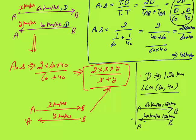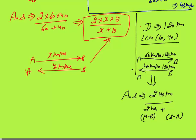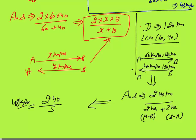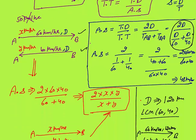With d = 120 km: total distance = 120 + 120 = 240 km. Time from A to B: 120 km at 60 km/h = 2 hours. Time from B to A: 120 km at 40 km/h = 3 hours. Total time = 5 hours. Therefore, average speed = 240 / 5 = 48 km/h.